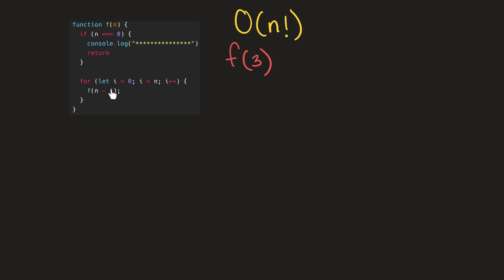Let's try to visualize this. So if we pass three to this function and we end up at this for loop, we can write it out like this. For each index up until three, but not including three: zero, one, two.